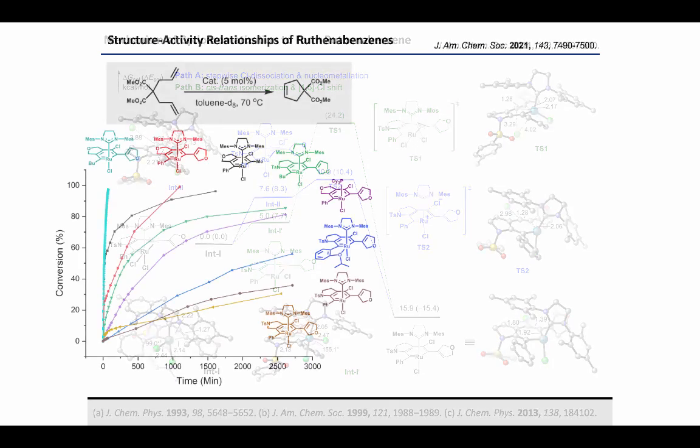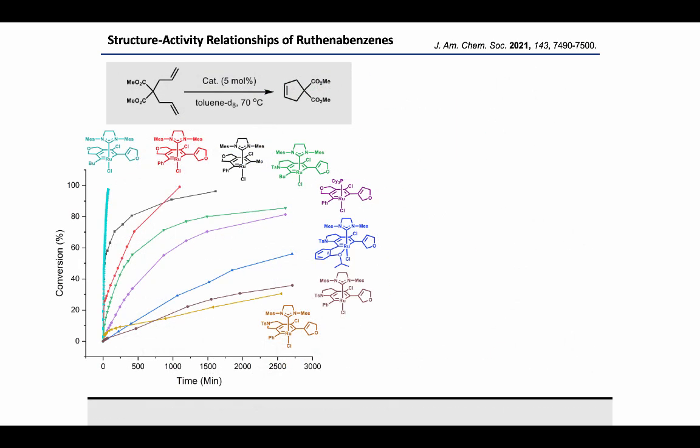Next, the structure-activity relationships for the RCM reaction of these ruthenobenzene complexes were studied. All ruthenobenzene complexes are latent catalysts and work only at higher temperature. The presence of a butyl substituent makes them more reactive than the phenyl substituent. Ruthenia isobenzofurans are more reactive than ruthenia indolenes and isoindolenes, and NHC-containing complexes are more reactive than PCy3-containing ones.